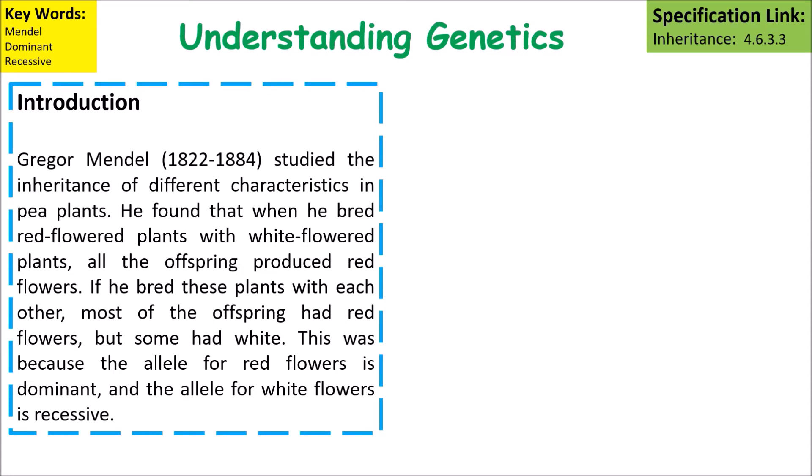Gregor Mendel studied inheritance of different characteristics in pea plants and flowers. He found that when he bred red flowered plants with white flowered plants the offspring would produce red flowers. If he bred these plants with each other, most of the offspring had red flowers however some had white flowers. This was because the allele for a red flower is dominant and the allele for a white flower is recessive.